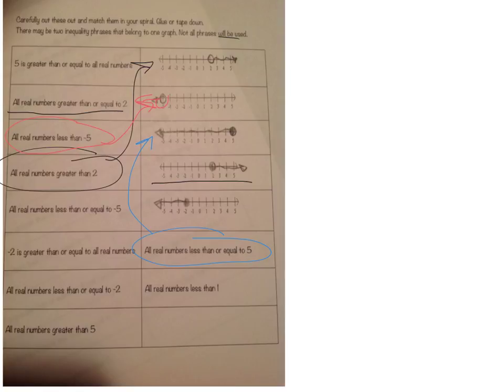The last one has a closed circle. The arrow is going to the left, so it's going to be less than or equal to negative 2. Which is here.